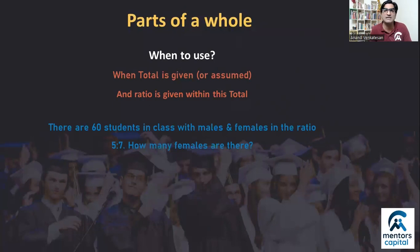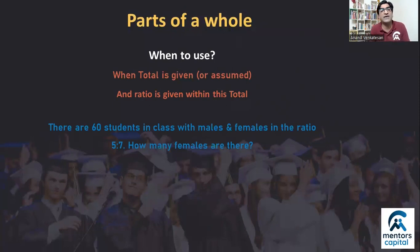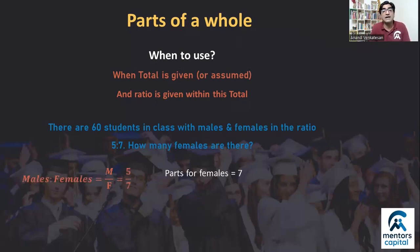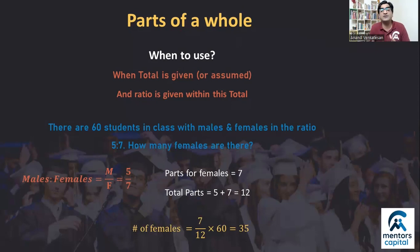Let me explain with a simple example. Suppose a class has 60 students, and the ratio of males to females is 5:7 — assuming all students are classified as either male or female. How many females are there? Females are 7 parts out of a total of 5+7=12 parts. So 7 out of 12 parts are female. We calculate 7/12 × 60, which simplifies easily to give 35 females.